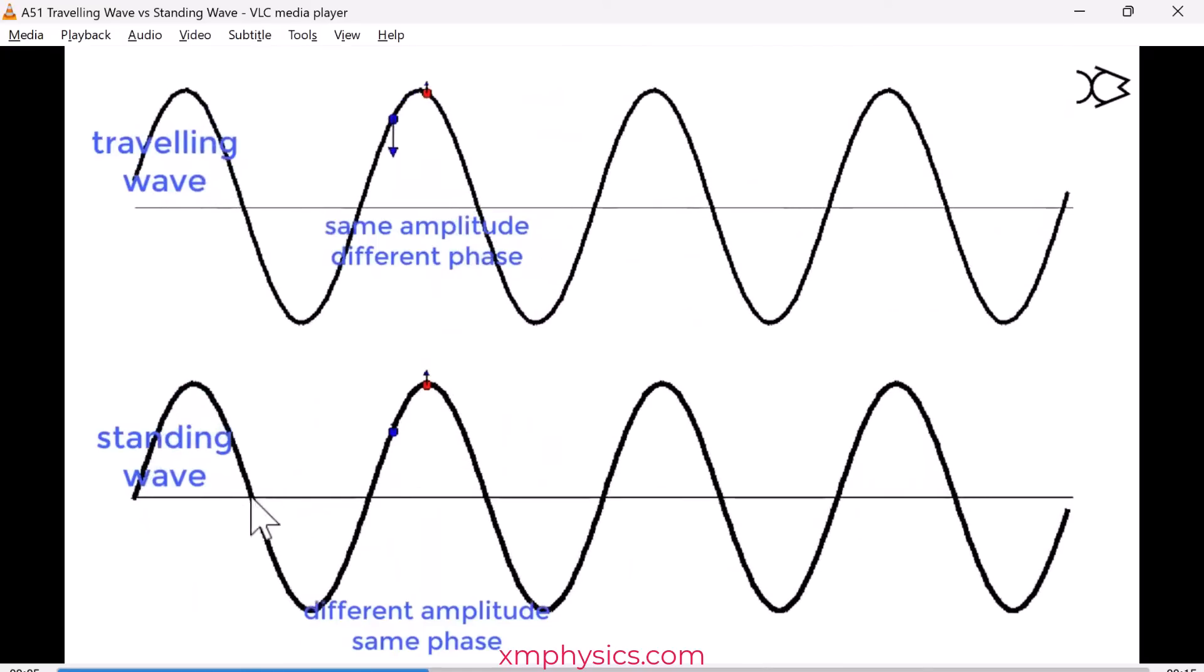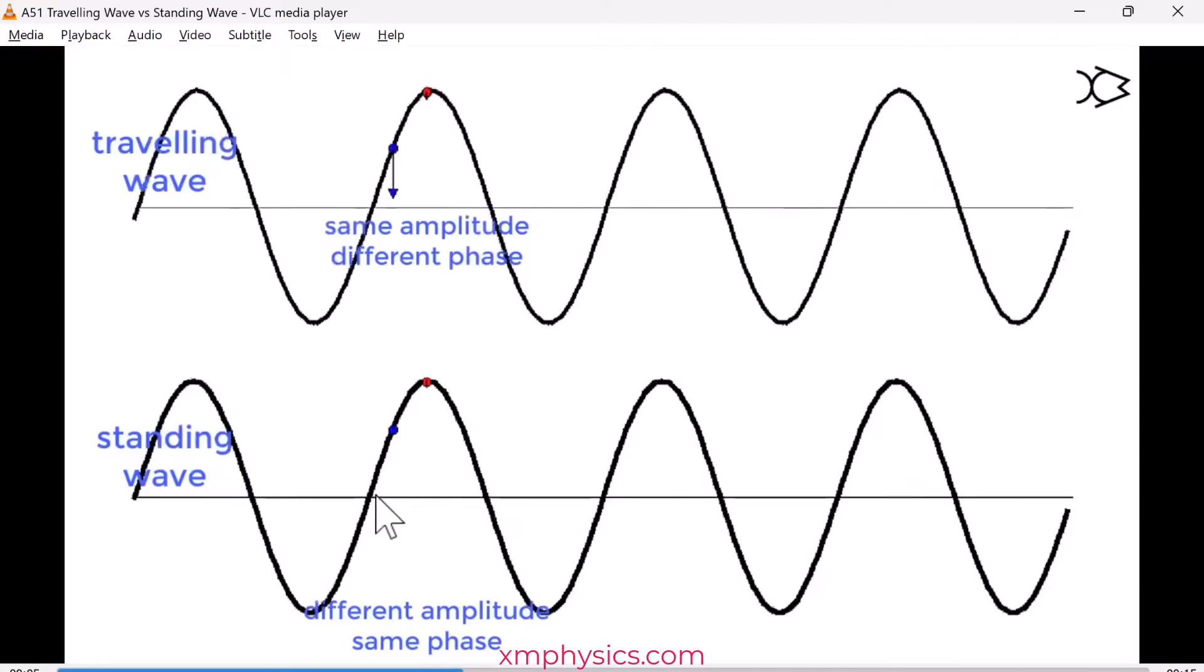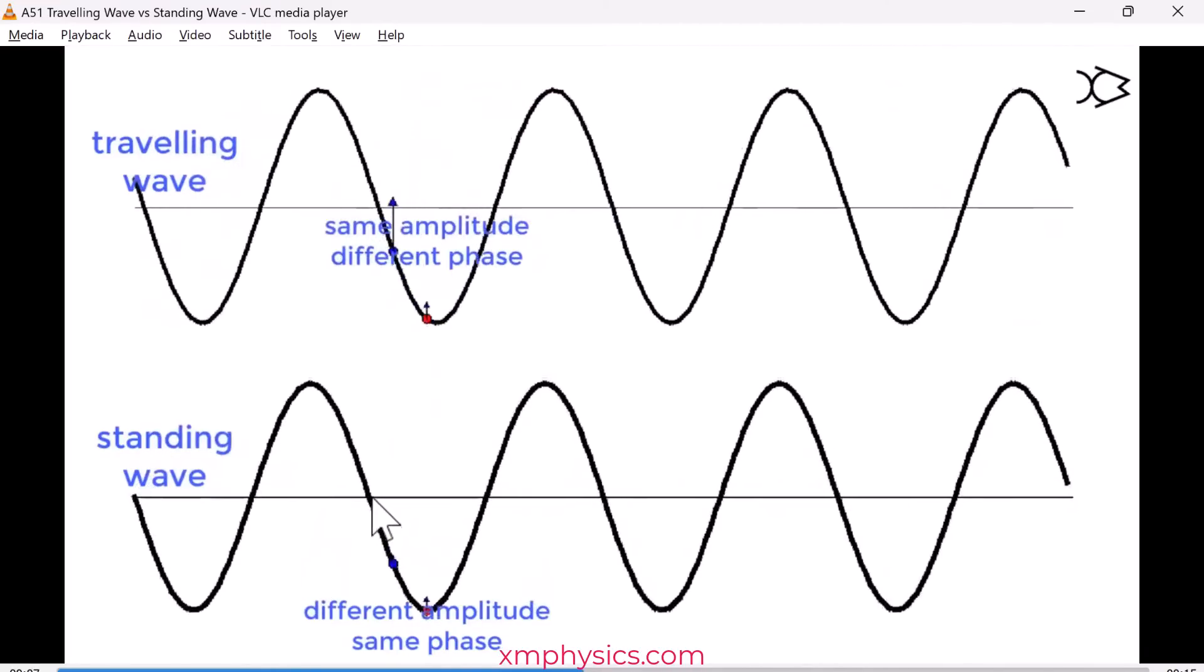What about the standing wave? Now, remember the standing wave has positions called the node. So at the nodes, there's no oscillation. The amplitude is zero. There's no oscillation at all.